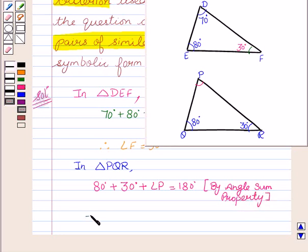From this we get, this implies angle P is equal to 70 degrees.